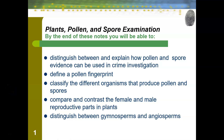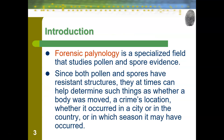Plants, pollen, and spore examination is another aspect of trace evidence where we can use plants, pollen, or spores to help solve a crime. Forensic paleontology is a specialized field that studies pollen and spore evidence. Since both pollen and spores have resistant structures, they can help determine such things as whether a body was moved, a crime's location, whether it occurred in a city or in the country, or in which season it may have occurred.